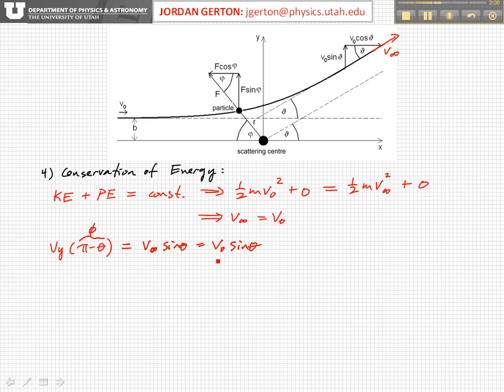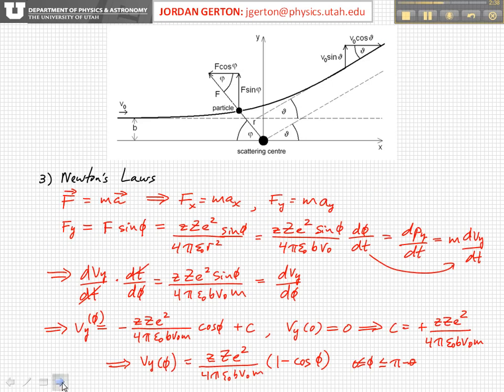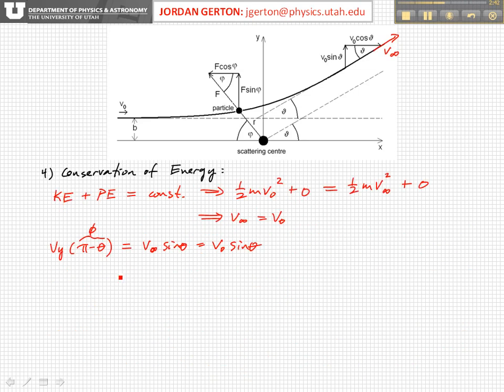So now, if we plug in our expression that we found on the previous view graph for v sub y at pi minus theta, then we get that z times little z times big Z, e squared over 4 pi epsilon naught, b, v sub 0, m, times 1 minus cosine of phi, and here phi is pi minus theta, 1 minus cosine of pi minus theta. And that is equal to v naught times sine of theta.